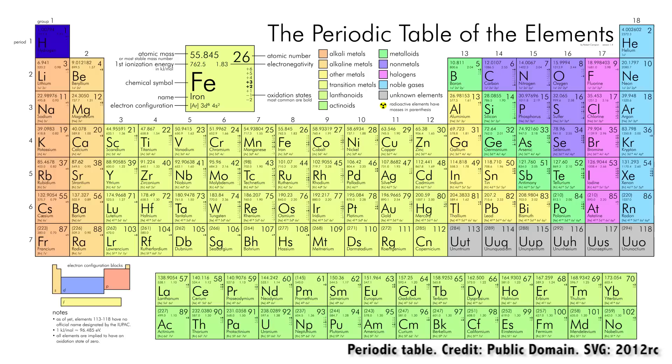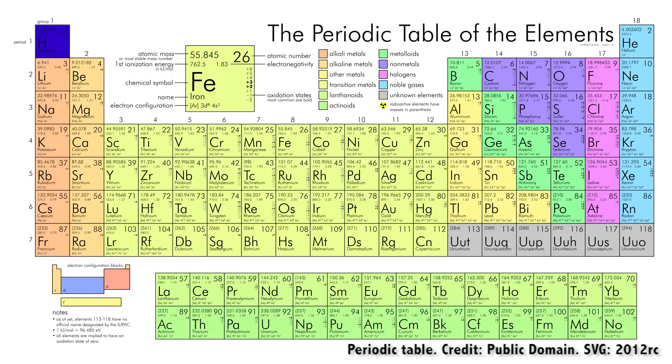Once the massive star runs out of hydrogen in its core, it switches to helium, then carbon, then neon, all the way up the periodic table of elements until it reaches iron. The problem is that iron doesn't produce energy through the fusion process, so there's nothing holding back the mass of the star from collapsing inward. And boom, supernova.